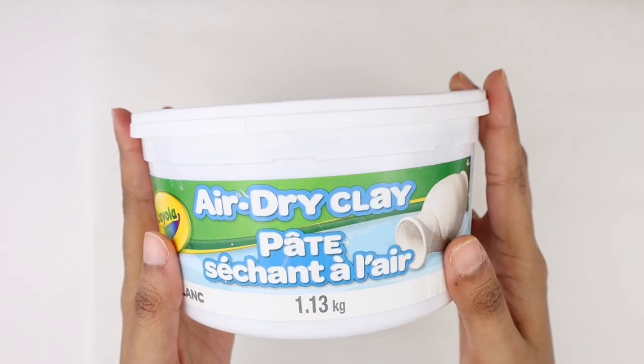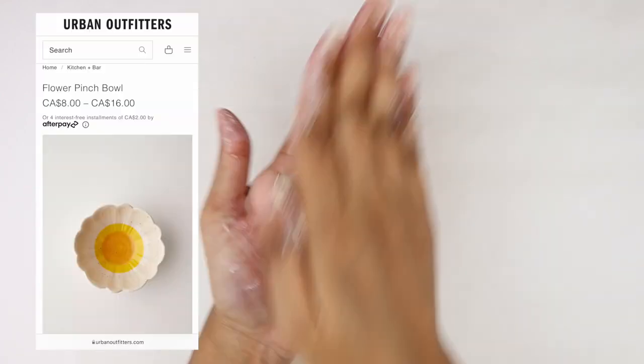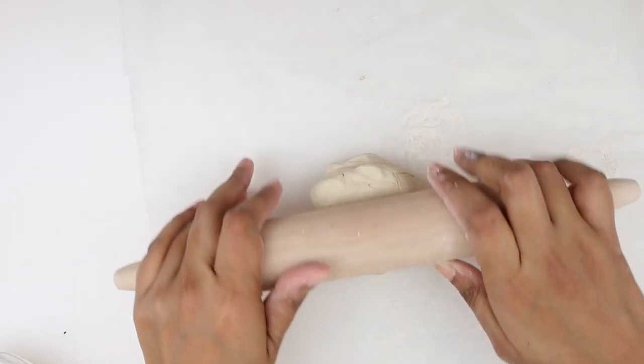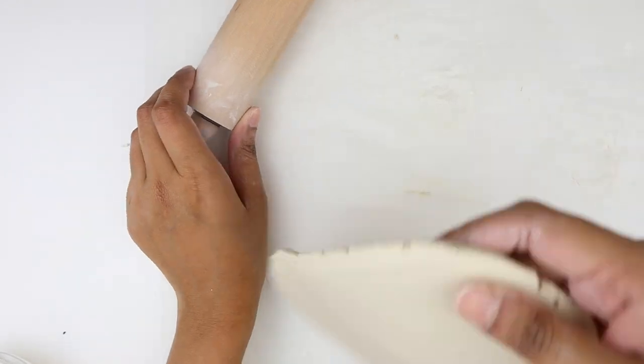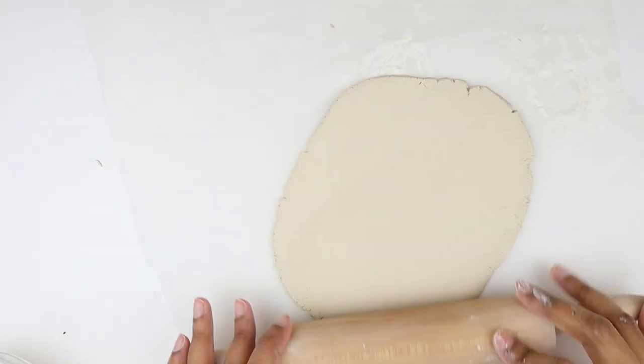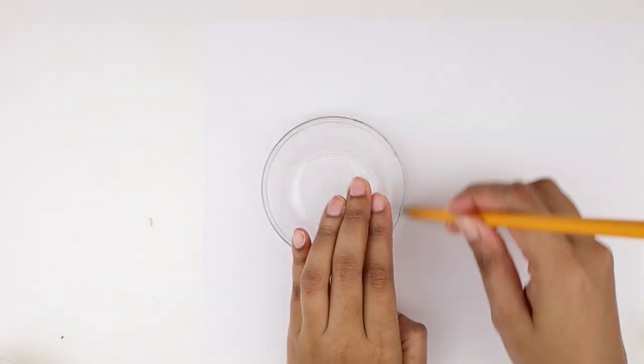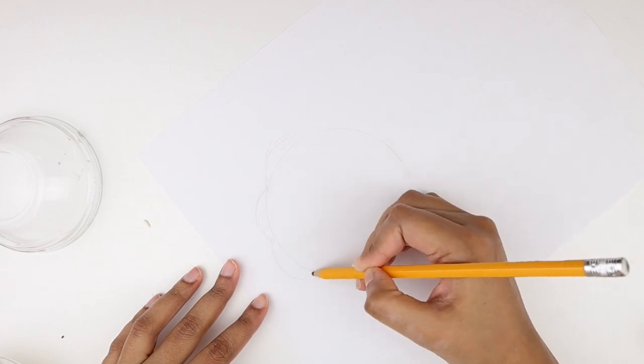I'm going to use this tub of Crayola air dry clay for today's projects. The first DIY is inspired by this flower pinch bowl from Urban Outfitters. For that, I'm taking a big chunk of clay, warming it up, and flattening it with a rolling pin which I only use for my clay projects. I'm going to continue rolling it until it reaches a thickness of about a quarter inch. Once that is done, I'm taking a piece of paper, placing this glass bowl on it, and tracing a circle.